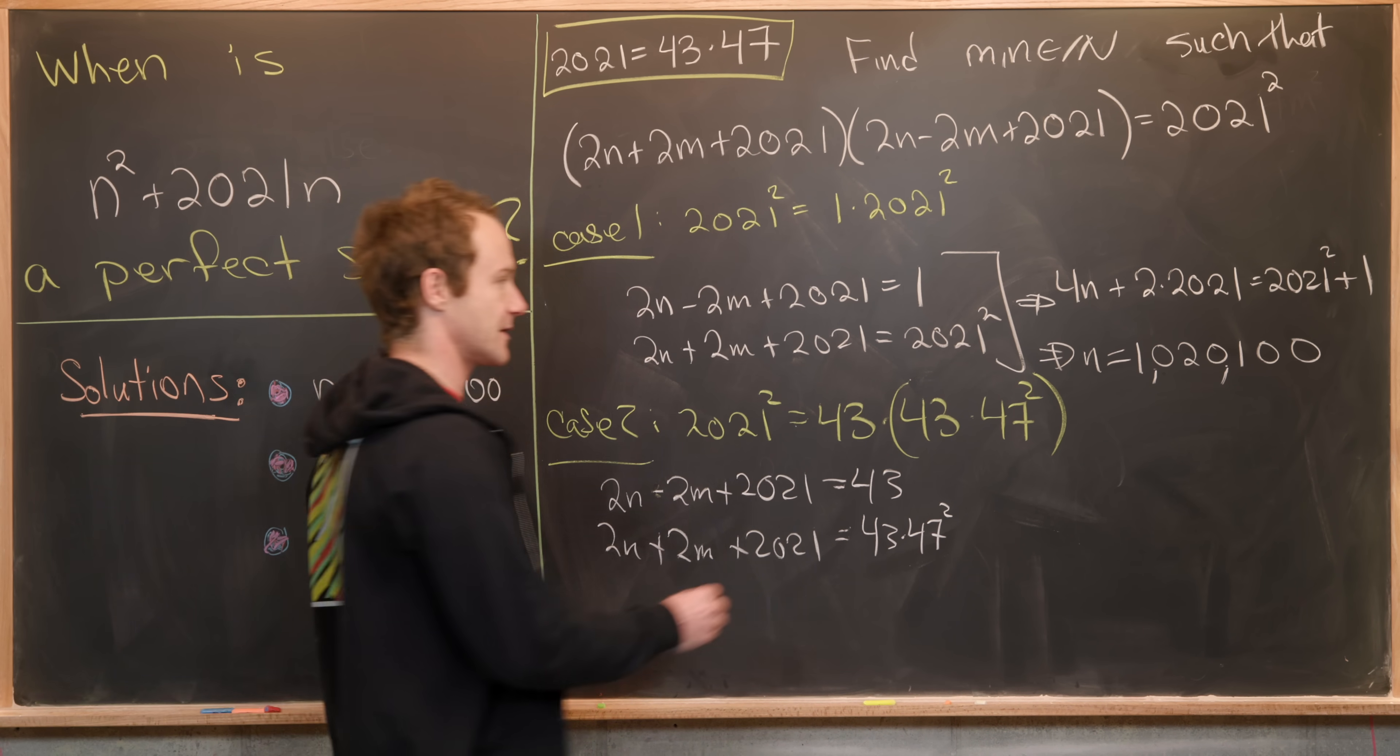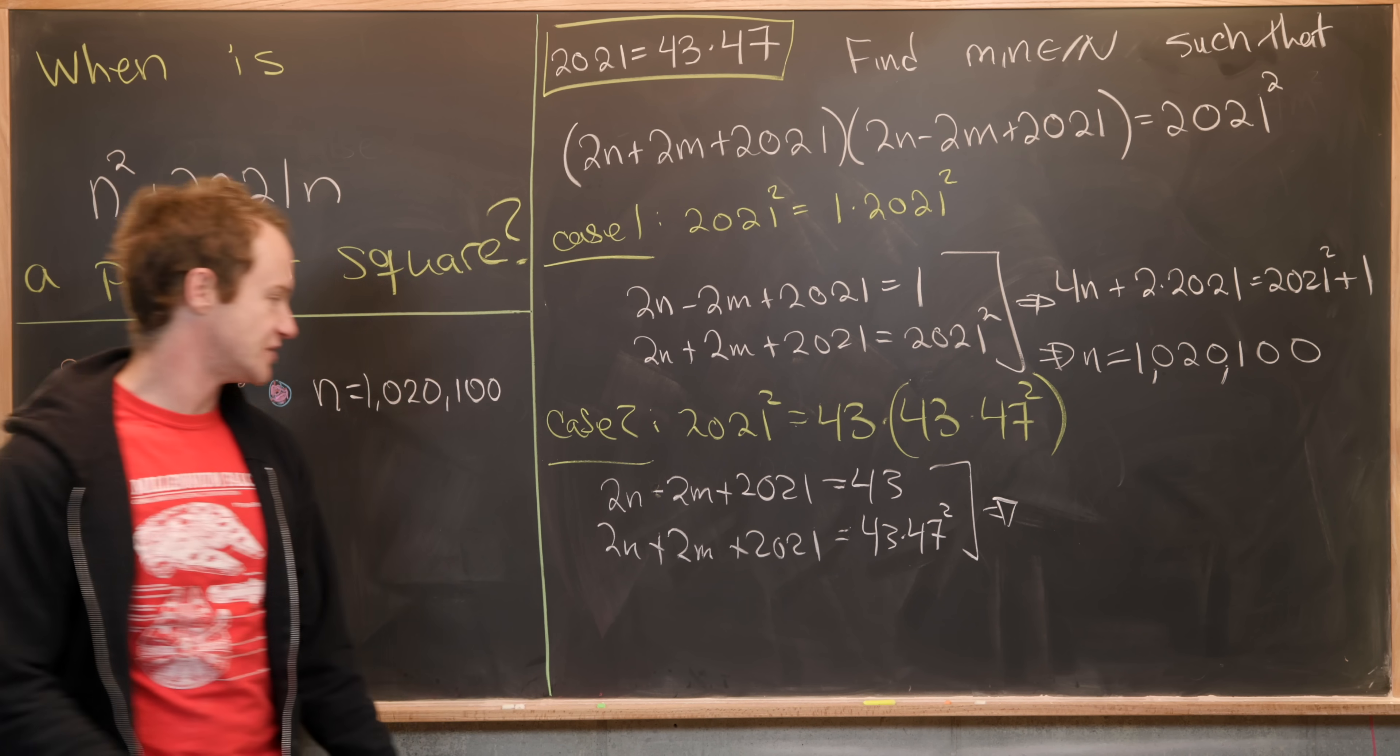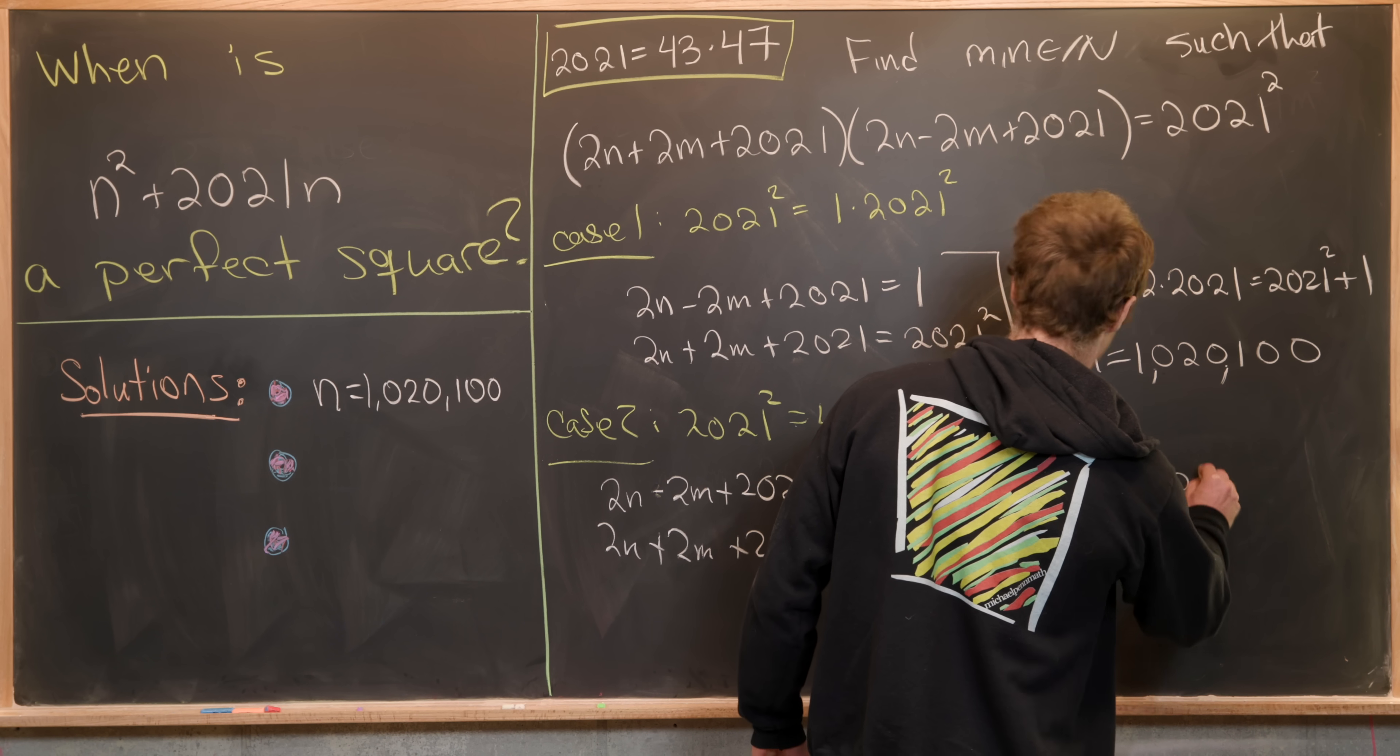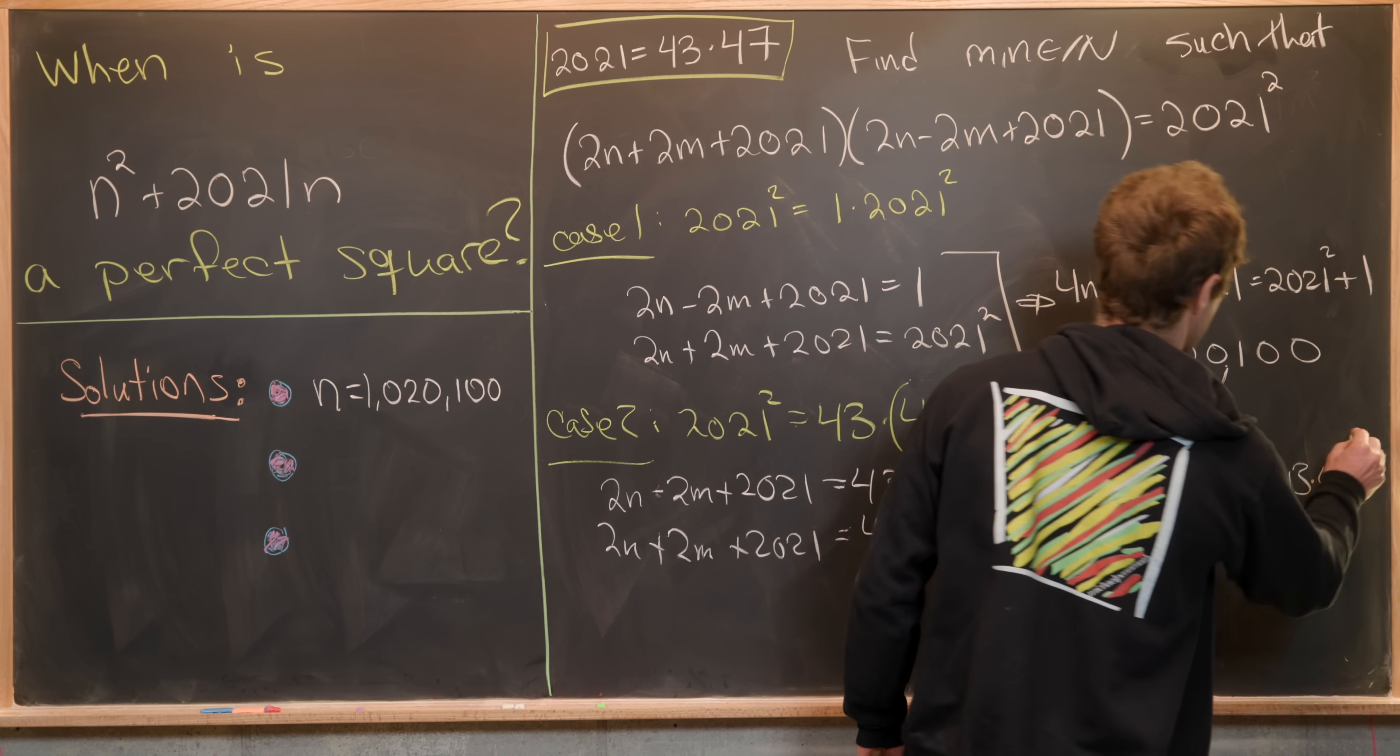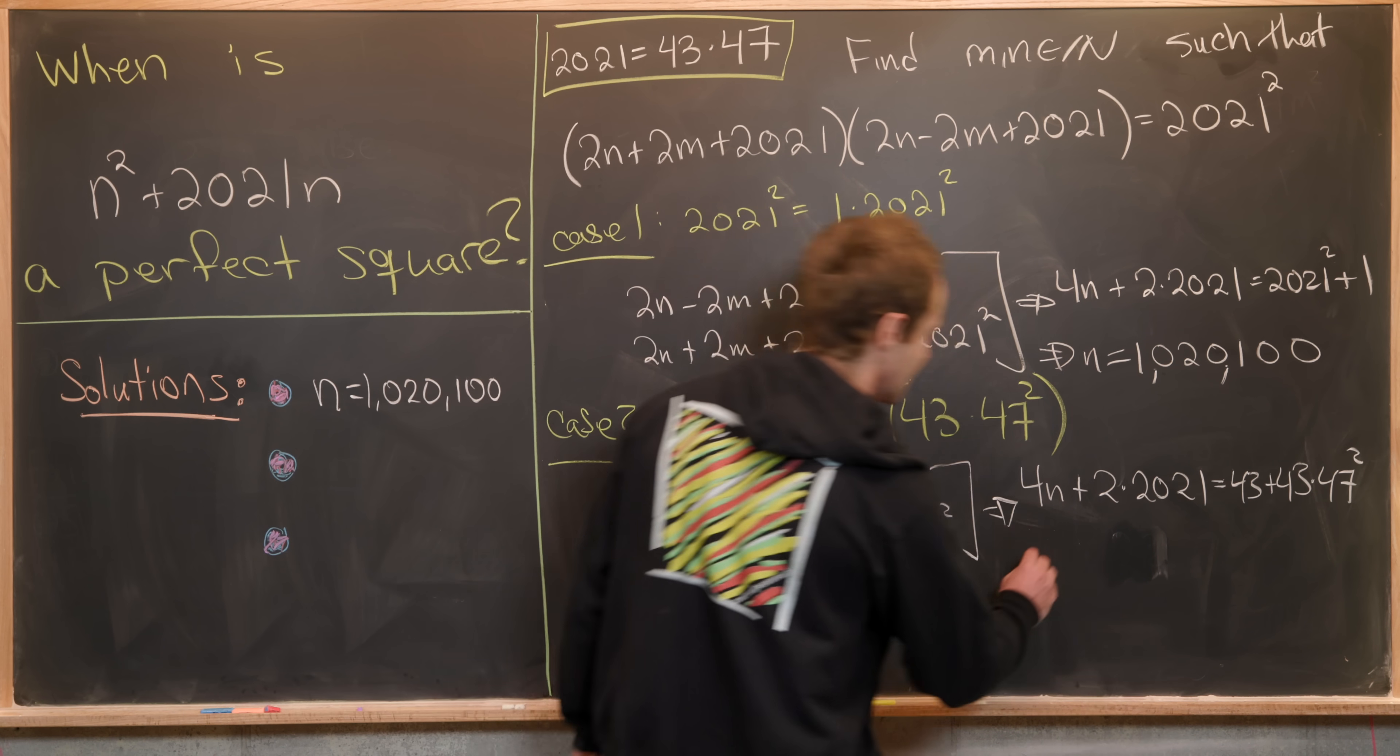Now putting that together again, just by adding these two equations, we see that we get 4n + 2(2021) = 43² + 43(47²). Again, it's pretty easy to solve that for n.